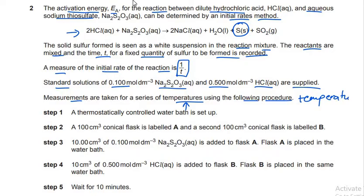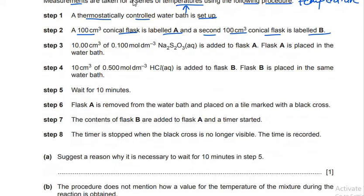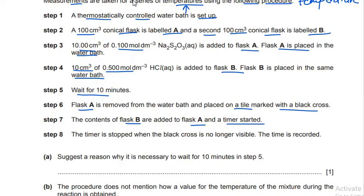The steps given are: a thermostatically controlled water bath is set up; a 100 cm³ conical flask is labeled A and a second 100 cm³ conical flask is labeled B. 10 cm³ of 0.1 mol per dm³ sodium thiosulfate is added to flask A and placed in the water bath. 10 cm³ of 0.5 mol per dm³ hydrochloric acid is added to flask B and also placed in the water bath. After waiting 10 minutes, flask A is removed and placed on a tile marked with a black cross. The contents of flask B are added to flask A and the timer is started. The timer is stopped when the black cross is no longer visible and the time is recorded.